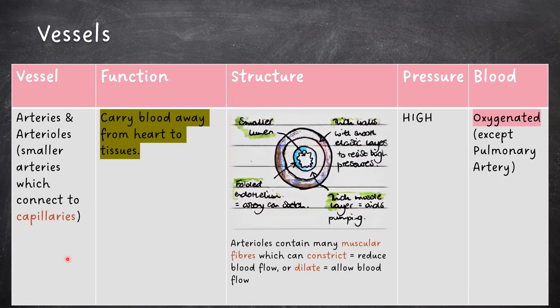Arterioles are smaller arteries which connect to capillaries. Arteries and arterioles carry blood away from the heart to tissues. They have a smaller lumen as well as thick walls with smooth elastic layers to resist high pressures. The folded endothelium means the artery can stretch, and a thick muscle layer helps aid pumping. Arterioles contain many muscular fibres which can constrict to reduce blood flow or dilate to allow blood flow. Pressure in arteries and arterioles is high and blood is oxygenated, apart from in the pulmonary artery, which carries deoxygenated blood from the heart to the lungs.